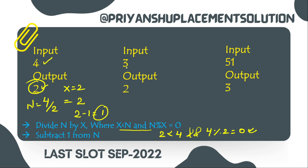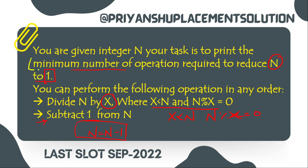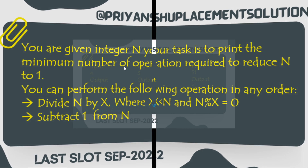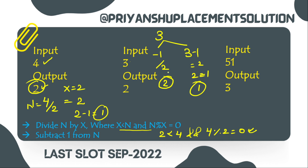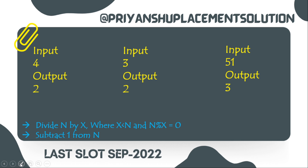For N equal to 3, the answer is 2 steps — and keep in mind, they have asked for the minimum number of operations. For 3, we can do: 3 minus 1 equals 2, then divide by 2 equals 1. Or we can do: 3 minus 1 equals 2, then 2 minus 1 equals 1. Both give two steps.